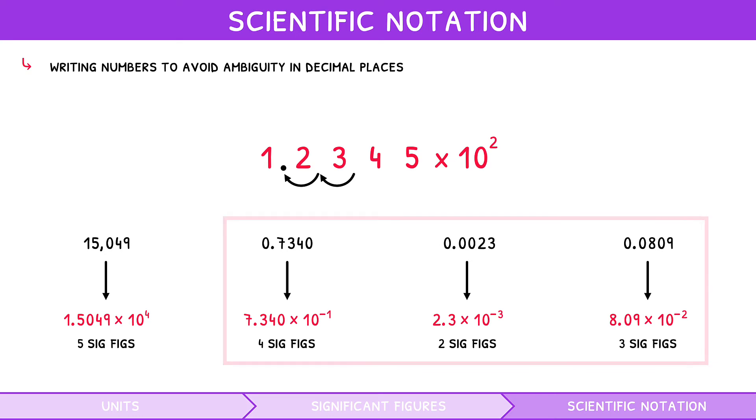Note, in the last 3, the power is negative as we are moving the decimal point to the right when creating the number between 1 and 9.99.